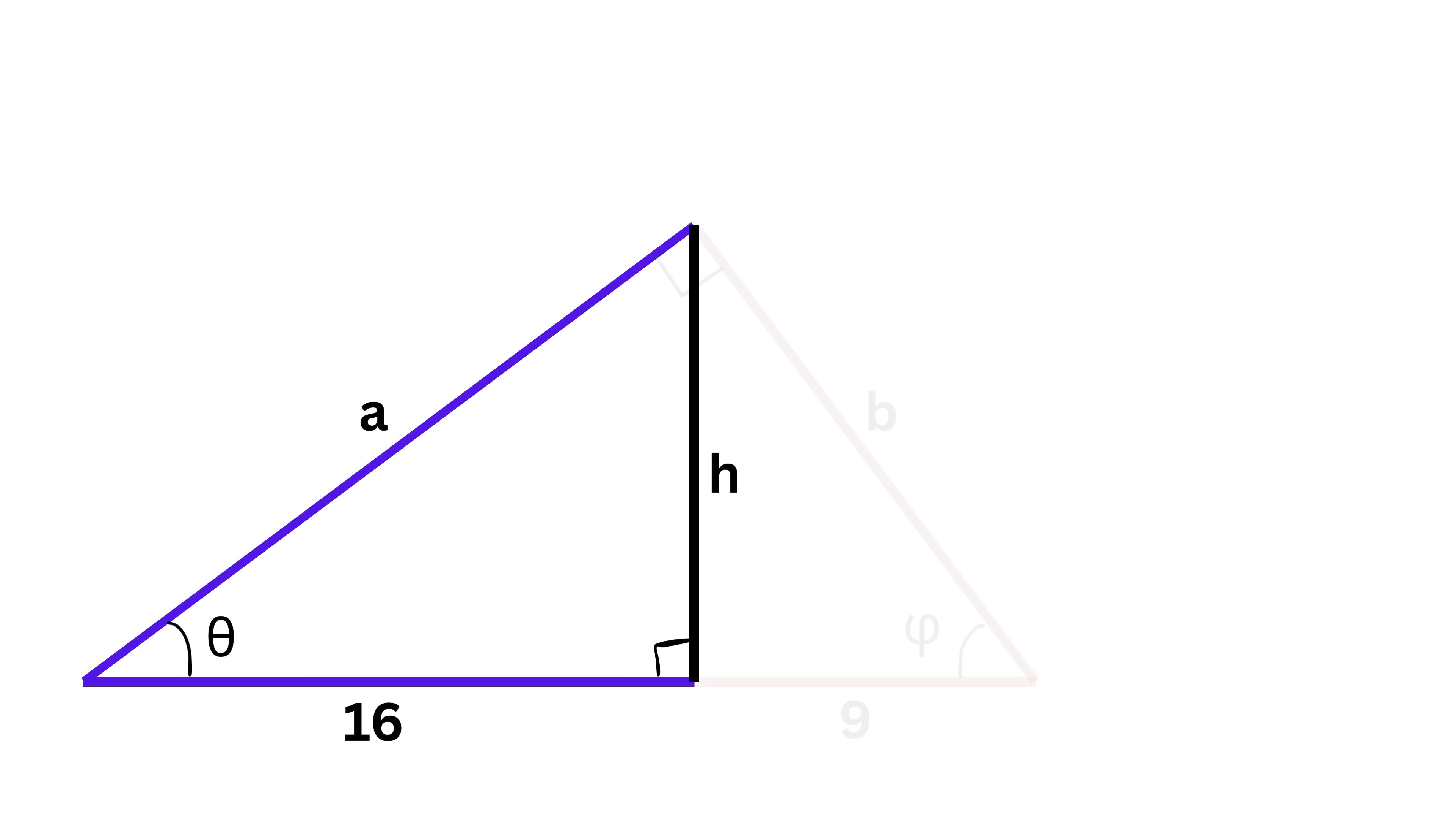Now, look at the left small triangle. It also has a right angle, because we dropped a perpendicular, and it shares angle theta with the big triangle. That automatically forces its third angle to be phi, since the total sum of the angles in a triangle must be 180 degrees.